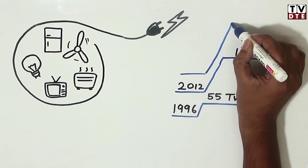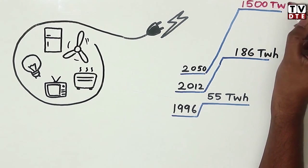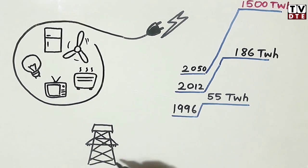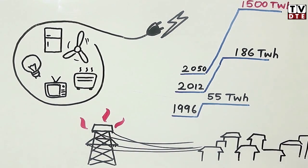And by 2050, this will increase to 1500 terawatt hours. Remember the 2012 grid failure? Household power demand had a large role to play in that.